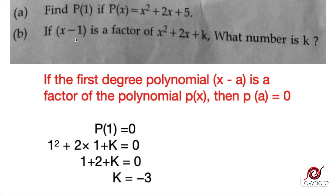In this case, x minus 1 is a factor of p of x, where p of x equals x squared plus 2x plus k. So by the factor theorem, p of 1 must equal 0. We substitute x equals 1: 1 squared plus 2 into 1 plus k equals 0.